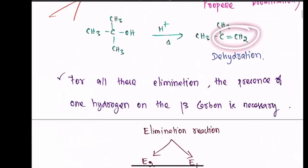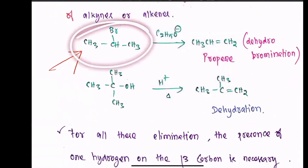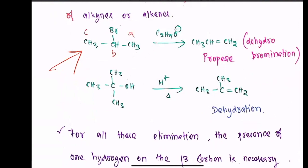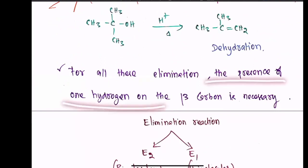For all these elimination reactions, the presence of at least one hydrogen on the beta carbon is necessary. The carbon bearing the leaving group is called the alpha carbon, and the adjacent carbons are called beta and beta-dash carbons. If you want an elimination reaction, the presence of one hydrogen on the beta carbon is necessary.